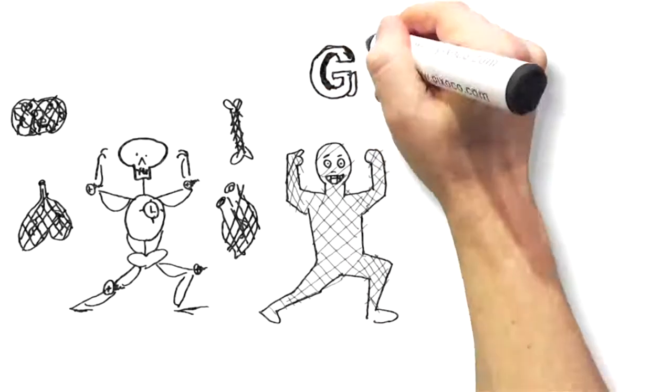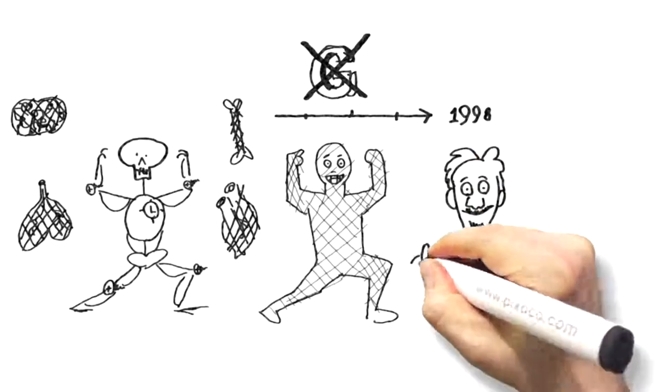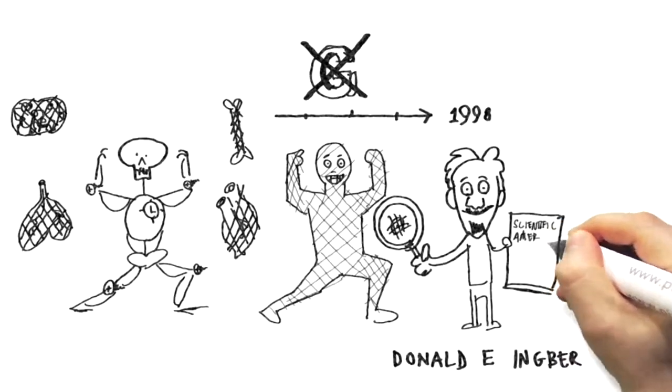It's a complete body block, from micro to macro. In 1998, the biologist Donald Ingber showed that even the cell, the smallest element of the body, is surrounded by fascia.